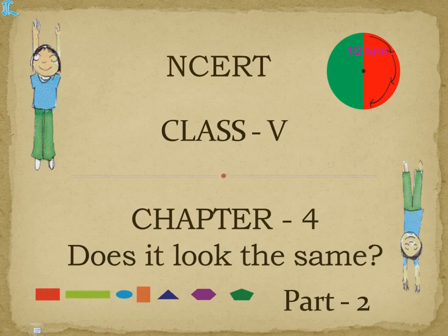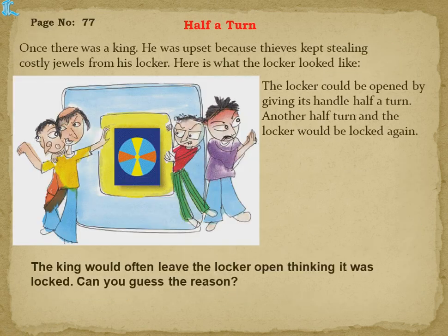Welcome to NCRT class 5, chapter 4: 'Does It Look Same?' Part 2. Half a turn: once there was a king who was upset because thieves kept stealing costly jewels from his locker.